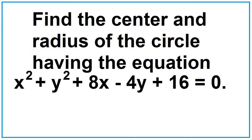Let's use the CTS and the DEF method to find the center and radius of the circle having the equation x squared plus y squared plus 8x minus 4y plus 16 equals 0.